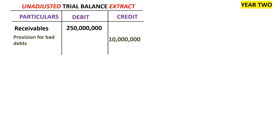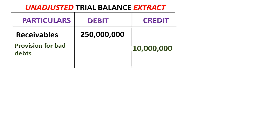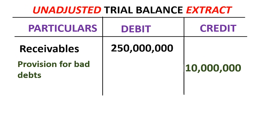Moving to the second year: after journalizing, posting to the ledger, balancing the books, and preparing the unadjusted trial balance, we have receivables of 250 million, and provision for bad and doubtful debts of 10 million. Whenever you see provision for bad and doubtful debts in an unadjusted trial balance, that figure was the closing balance of the previous year — in year one we closed off with 10 million, so this is the opening provision carried forward from the prior year.